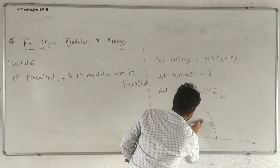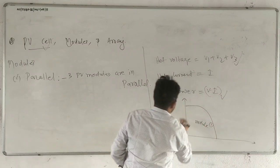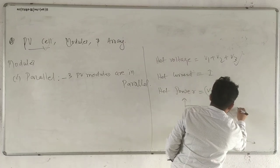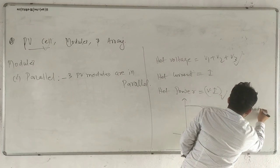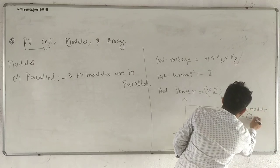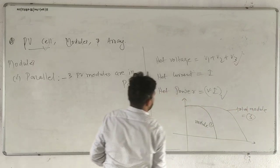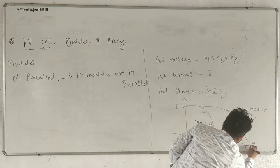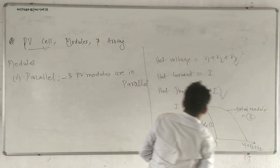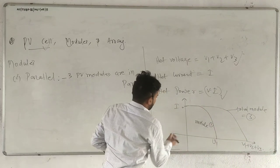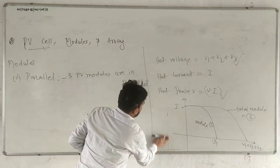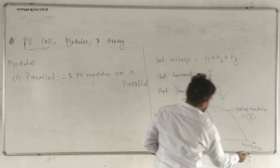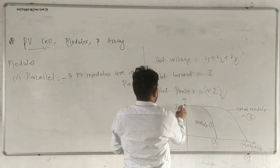This is model 1 with total modules equal to 3. The current will be the same, but voltage will be V1 plus V2 plus V3. The IV plot of 3 modules in series: our voltage will be increased but our current will be constant.